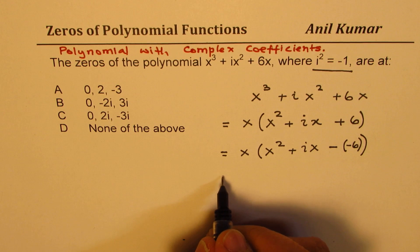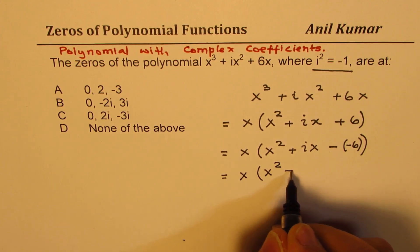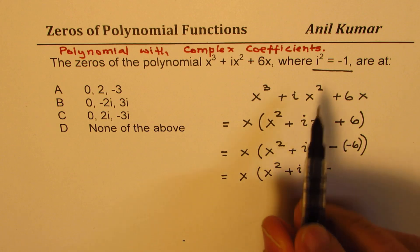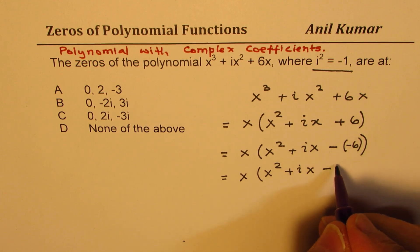I've added this step to make my point clear. I'll write the trinomial as x² + ix - i²·6. I'm making this very important change here: I'm writing this as i² times 6. Do you see that part?